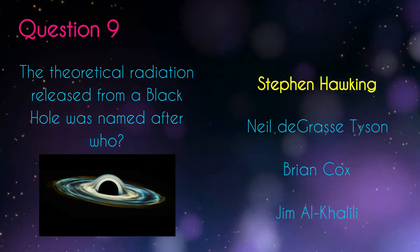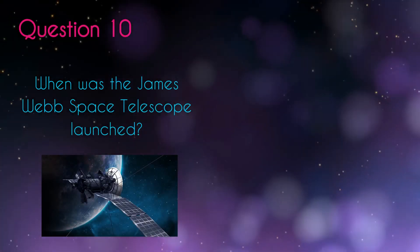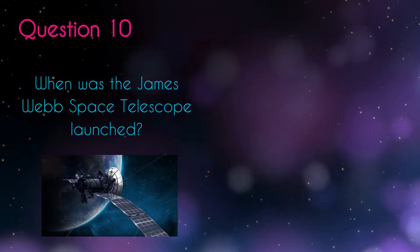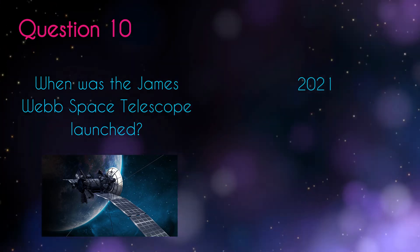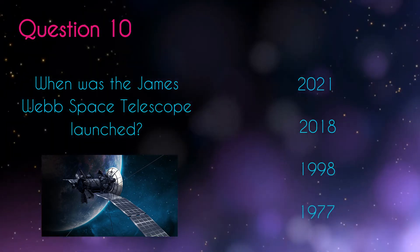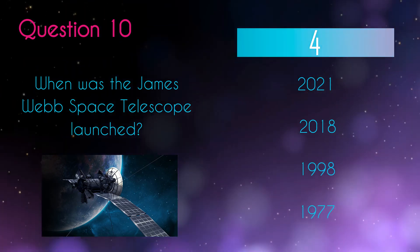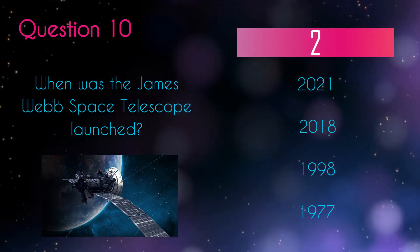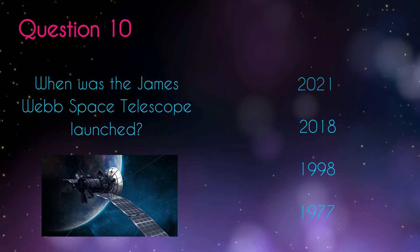And question ten. When was the James Webb Space Telescope launched? 2021, 2018, 1998, 1977. December 2021.